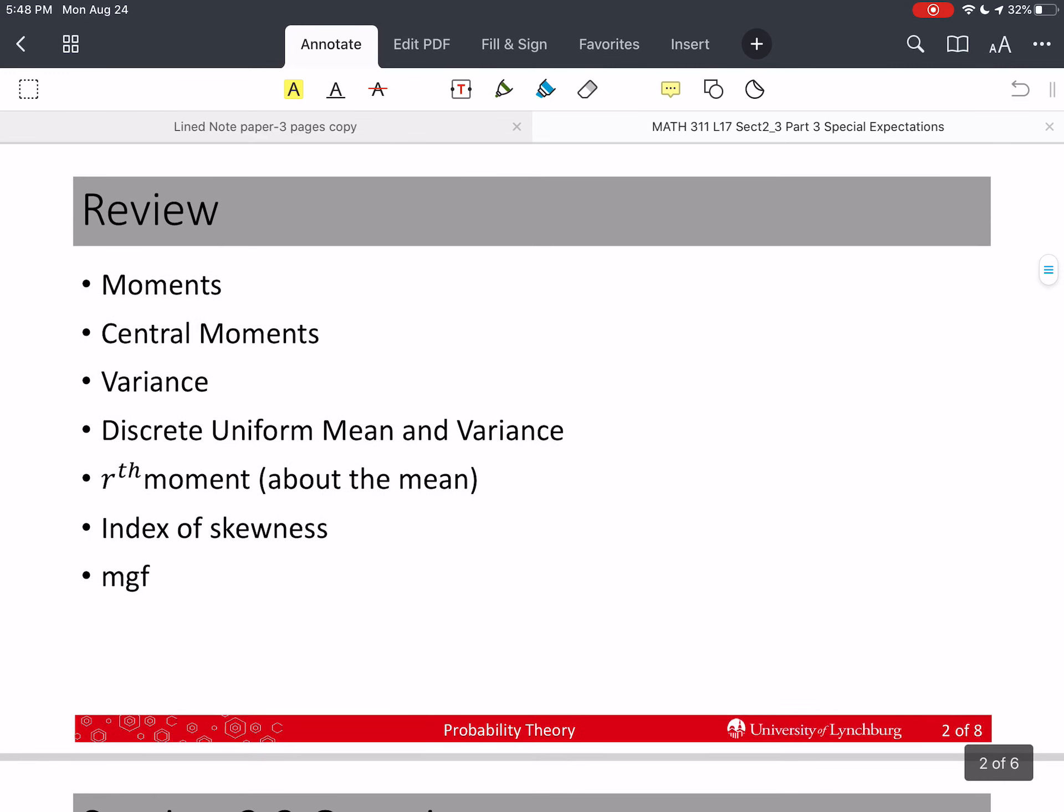In this section, we've already talked about moments, central moments, the variance. We talked about the mean and variance of the discrete uniform. Last time, we went over an r-th moment and an r-th moment about the mean. We discussed the index of skewness,